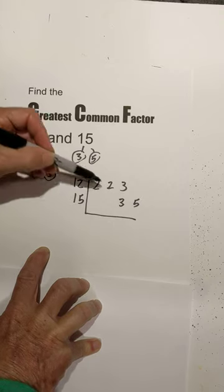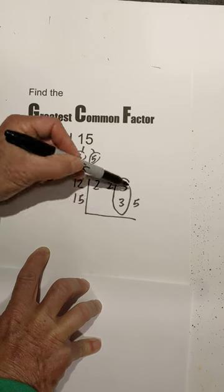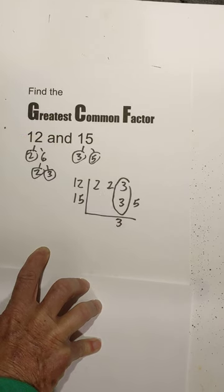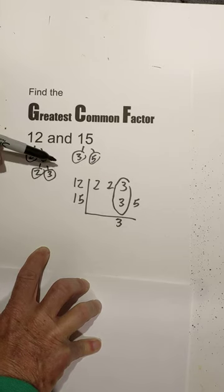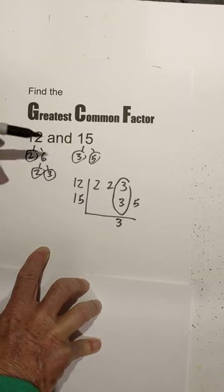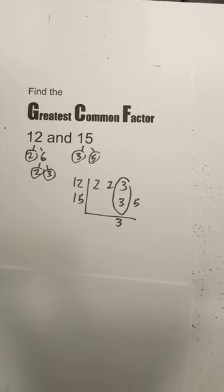Then all you do is look for, since we have two numbers, two numbers in a column, bring it down and that's three. What if there's no two numbers in a column? Well then the greatest common factor will be one, or if you have more than one, you multiply them. I hope that helps.